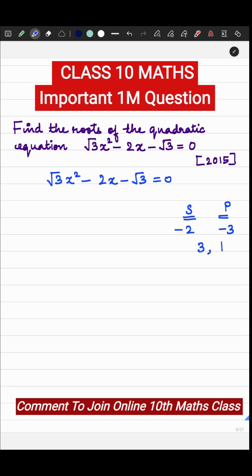So 3 and 1, 3 ones are 3. If you put a minus in 3 you will be able to get a sum of minus 2. So these are the two factors or two roots.